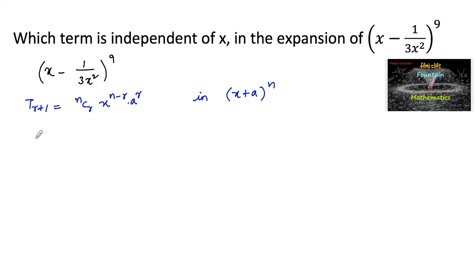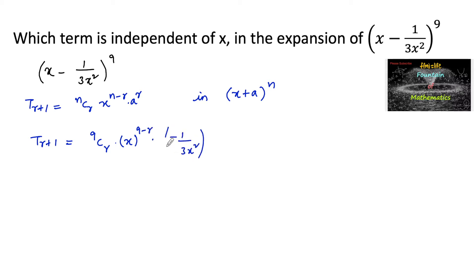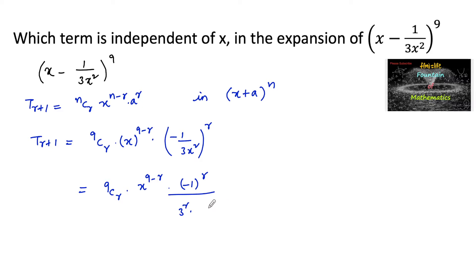So let us write here: T(r+1) is equal to, where n is equal to 9, 9Cr times x to the power of (9 minus r) into (minus 1 by 3x squared) whole to the power of r. Simplifying: 9Cr times x to the power of (9 minus r) into (minus 1) whole to the power of r, upon 3 to the power r into x to the power of 2r.